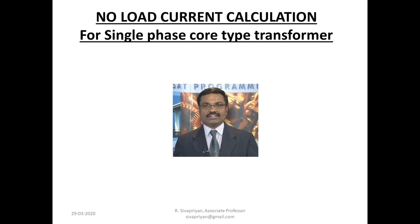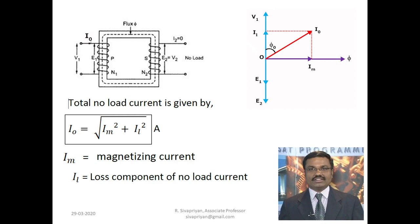Hi everyone. I am going to discuss no-load current calculation for a single-phase core-type transformer. You might be wondering what the term 'no-load current' means. A transformer has two windings: a primary winding connected to the supply and a secondary winding connected to the load. When you connect the primary winding to the supply, it produces flux on the core, and that flux interacts with the secondary winding.